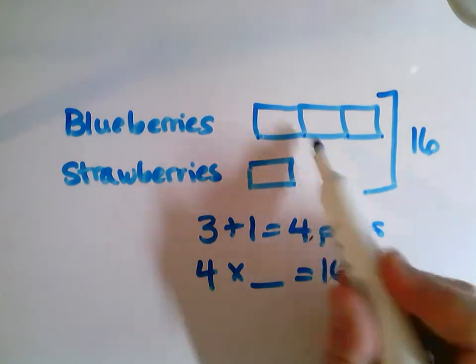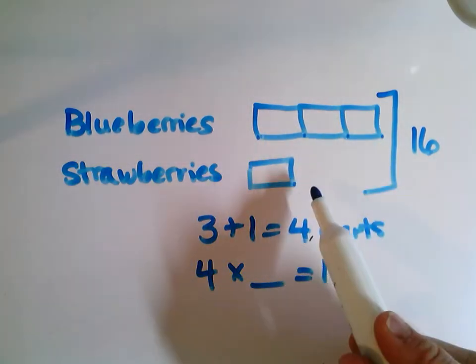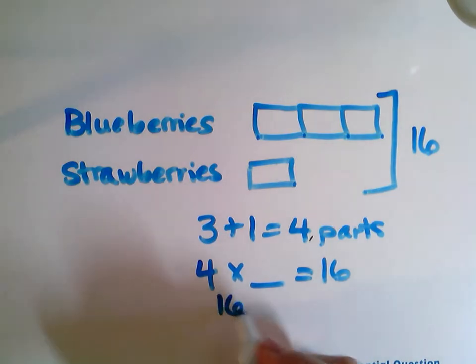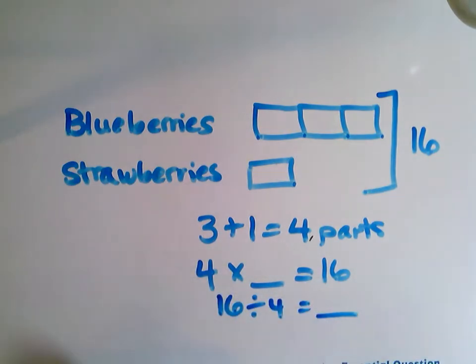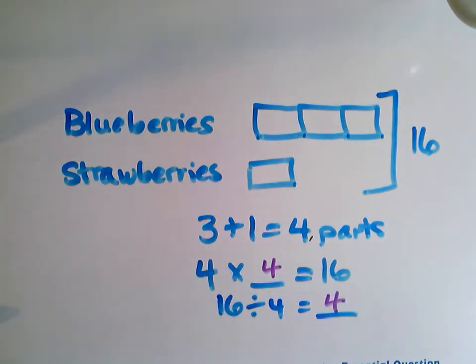And those parts are going to equal 16. Some number inside of each of those is going to multiply by my four, because I have four parts all together, to make 16. So I can do four times blank equals 16, or I could do 16 divided by four. Now I know that four times four is 16 or 16 divided by four is four.